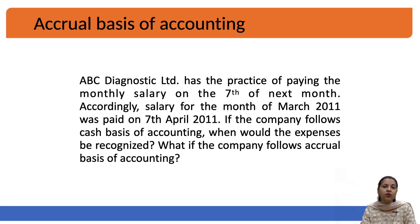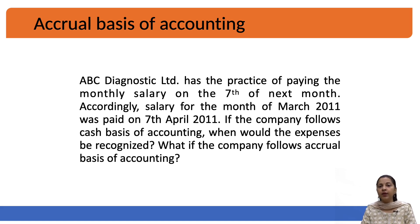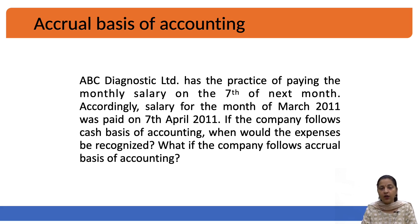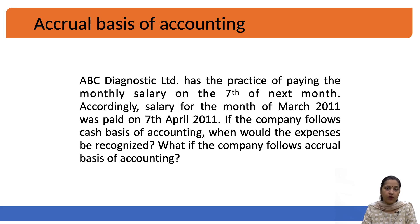Moving on to the accrual basis of accounting: this is a basis of accounting that several companies follow. There are two bases — cash basis and accrual basis. Under cash basis, all transactions entered in the books of accounts are made for cash only; a credit transaction cannot be entered. Under accrual basis, both cash and credit transactions go into the books of accounts. Generally, accounts are prepared as per the accrual basis of accounting.